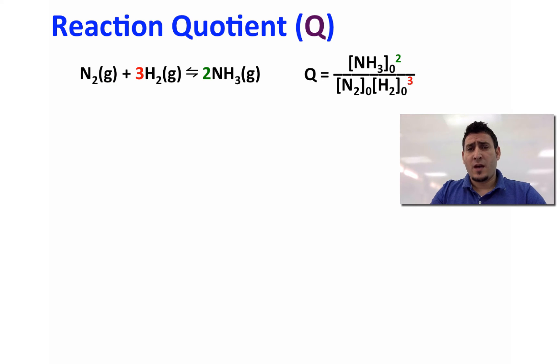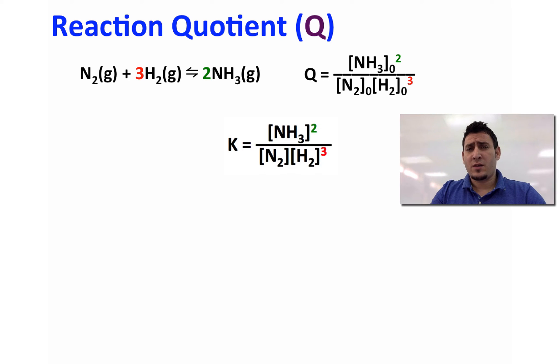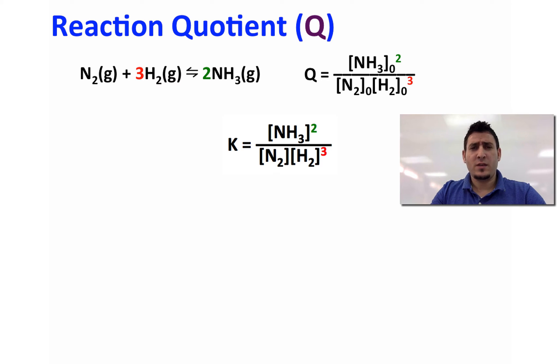Remember that for the equilibrium constant expression we use the equilibrium concentrations, whereas for Q we use the initial concentrations.